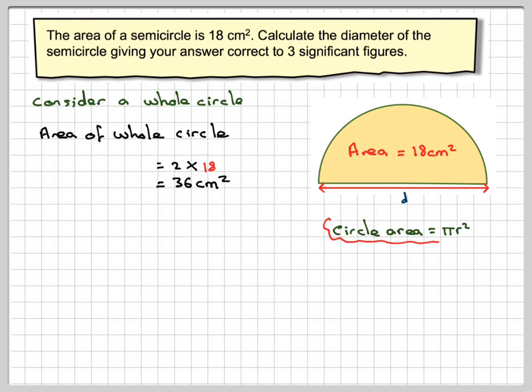Now we know the area of a whole circle is πr², so I can take 36 and put it equal to πr², and then try to find the radius using this formula.